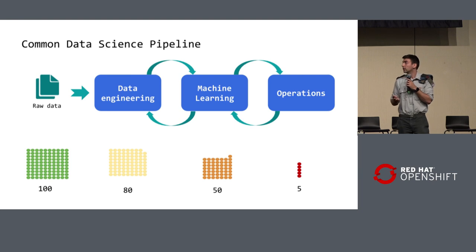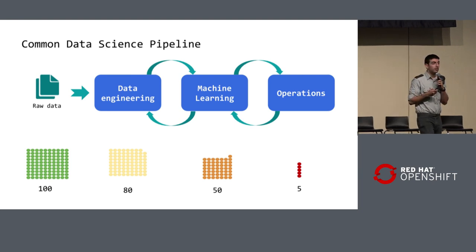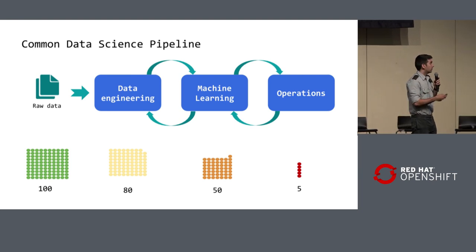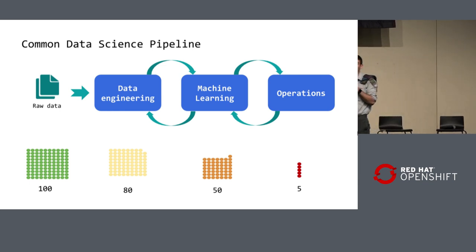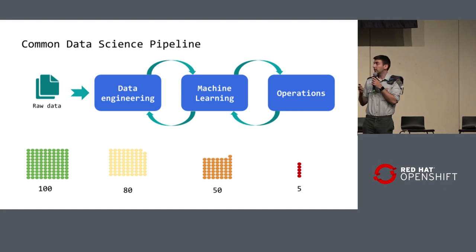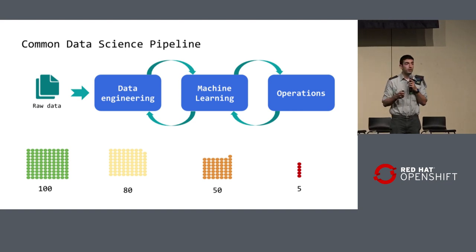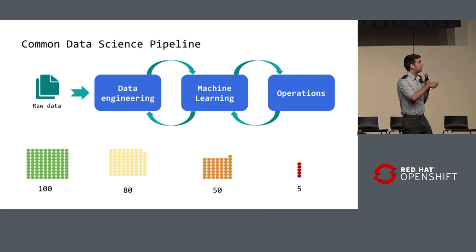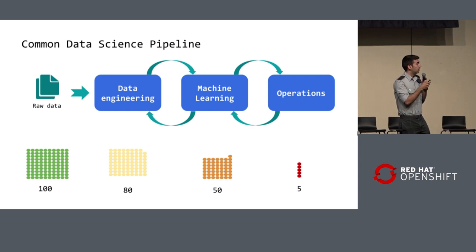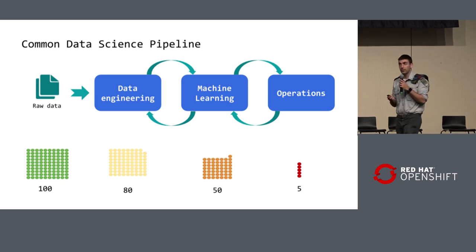In our organization, if we take 100 new datasets, in the final round only five are really going to production. That's because of this exhausting process of building machine learning models. Some of them fail because of really small things, and it's just a waste of data and waste of knowledge.